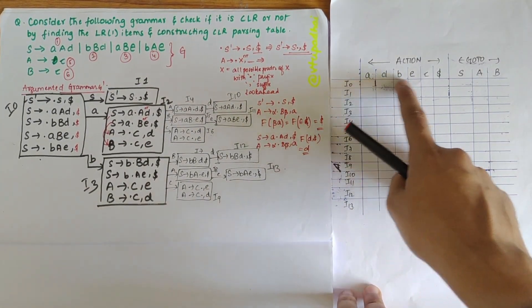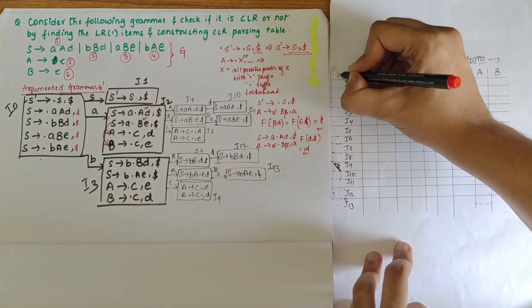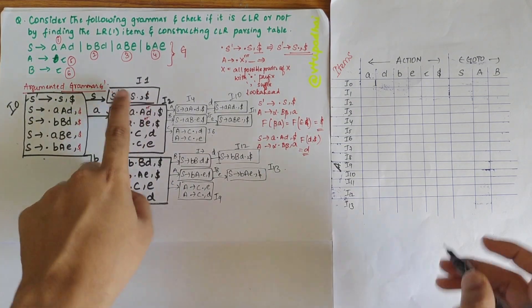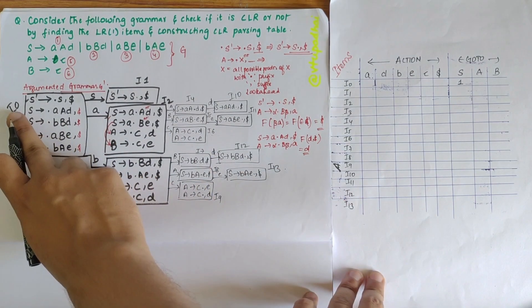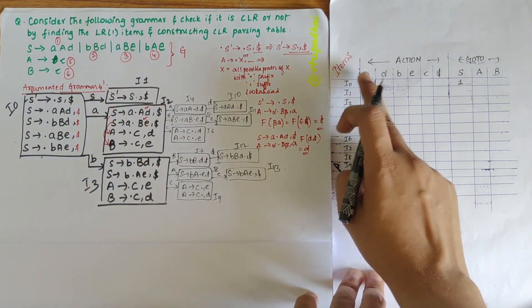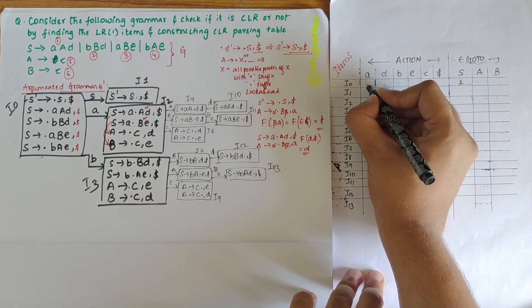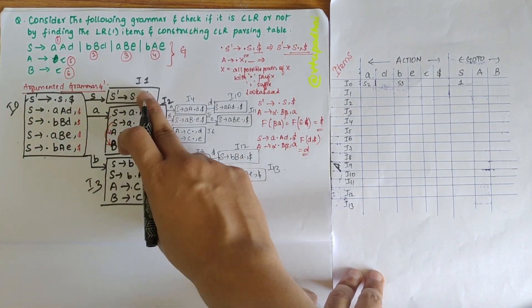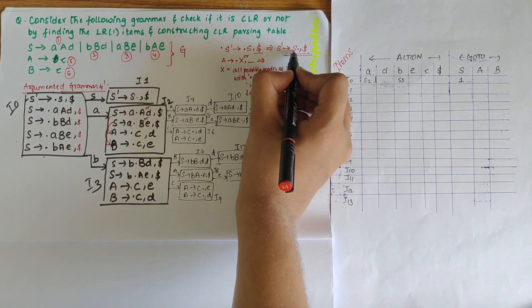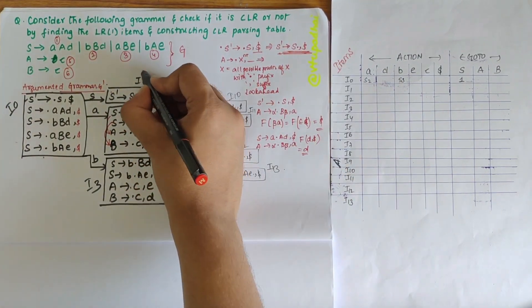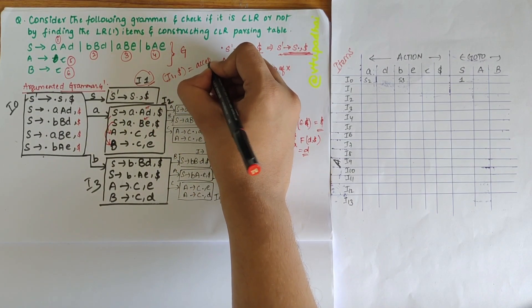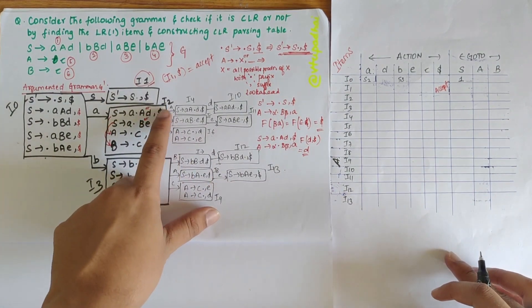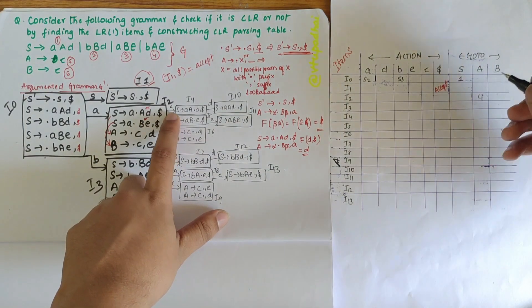My next step is to construct the CLR parsing table, with the action part comprising all terminals and goto comprising all non-terminals, with items I0 to I13 as rows. From I0 over S I get I1, so I write 1 in the goto column. I0 over small 'a' gives I2 — since 'a' is a terminal in the action part, I write shift 2 (S2). I0 over 'b' I write S3. For I1, it has S' → S•, $ — since the start symbol's production is complete with $ lookahead, I write accept at state 1 under $.